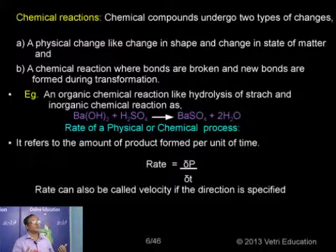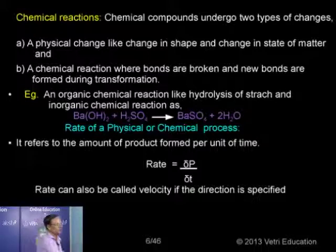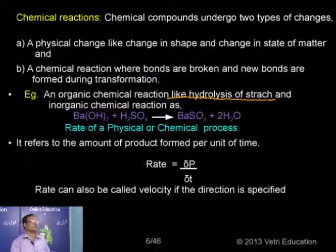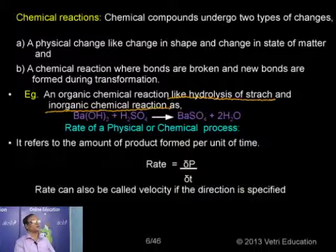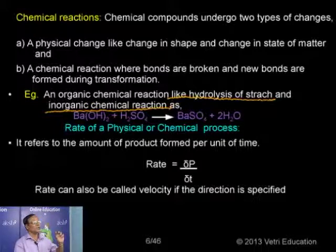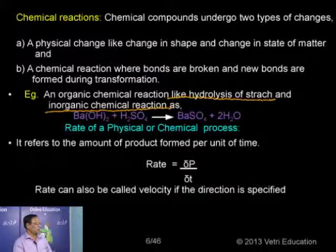Chemical reactions are of two types: organic and inorganic. Almost all reactions happening inside the body, such as in the digestive system, are organic. For example, hydrolysis of starch — breakdown of any food product, whether carbohydrate, proteins, or lipids — is an organic chemical reaction. An example of an inorganic chemical reaction is iron hydroxide treated with sulfuric acid, giving iron sulfate and water.